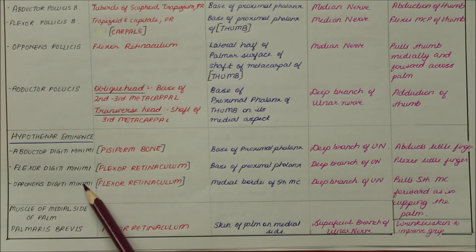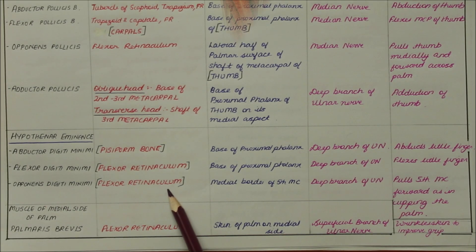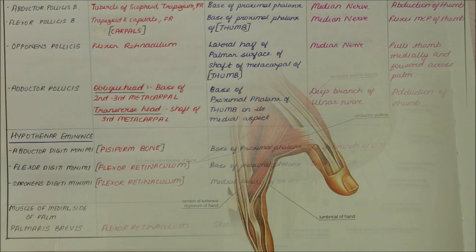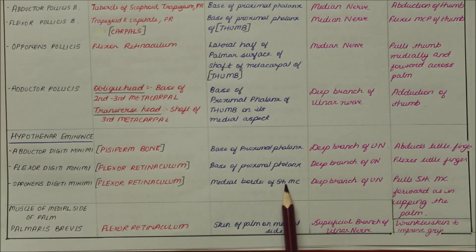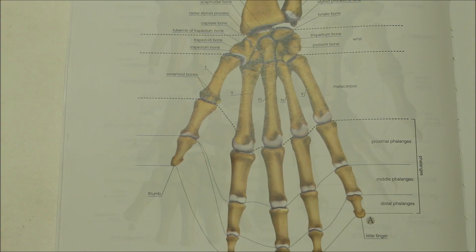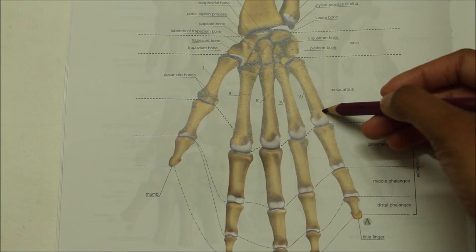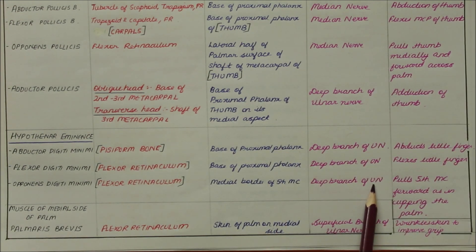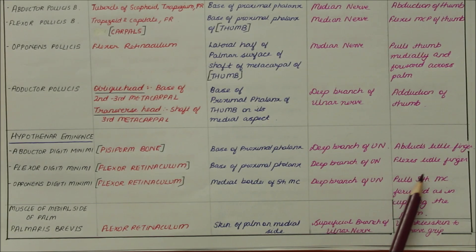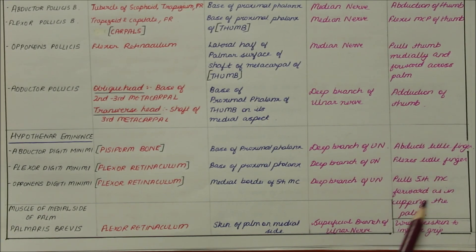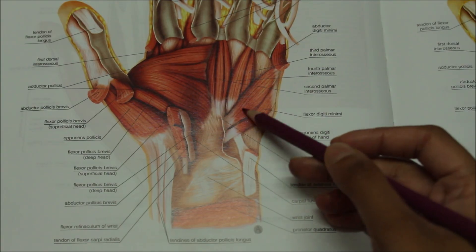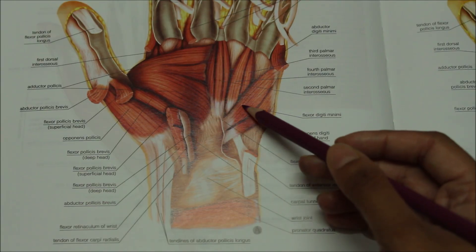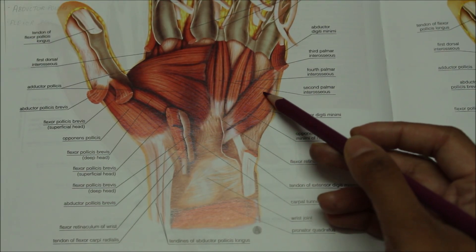Next we have the opponens digiti minimi. It originates from the flexor retinaculum and inserts into the medial border of the fifth metacarpal. It is supplied by the deep branch of the ulnar nerve, and its action is that it pulls the fifth metacarpal forward as in the cupping of the palm.